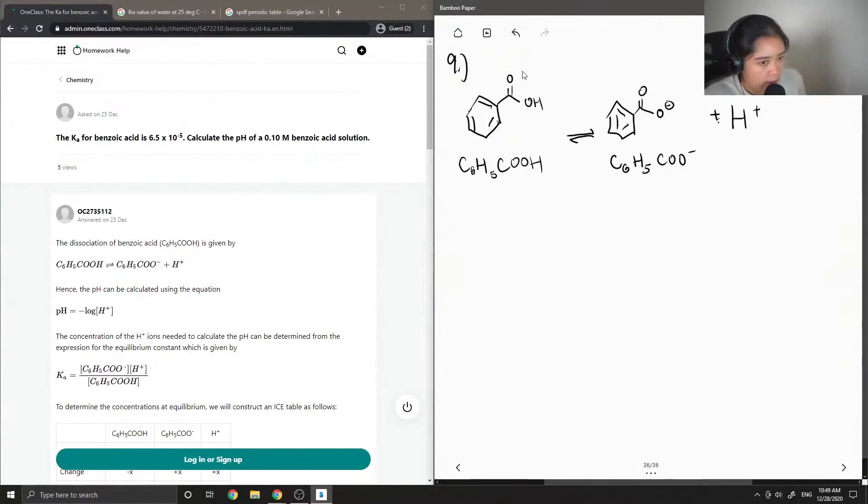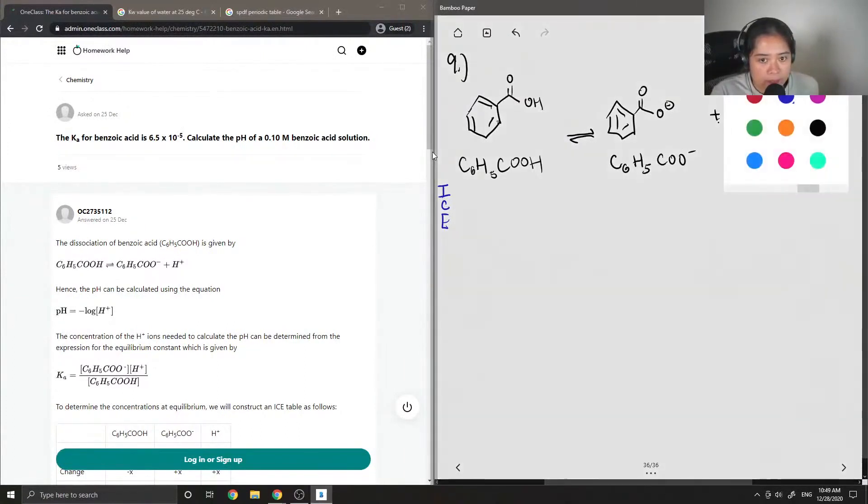Okay, so next we need to construct an ICE table. ICE is the initial, the change, and then at equilibrium. So we start off with a 0.1 molar solution of benzoic acid. So the initial concentration of the benzoic acid solution is 0.1. So I'm going to put 0.1 under its initial column or the initial row. And then for the concentration of our products, at the start of the reaction, we start off with no product. So their initial concentrations are 0.